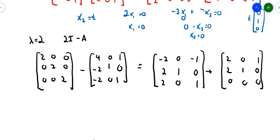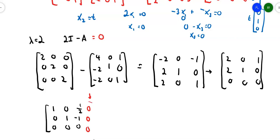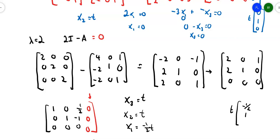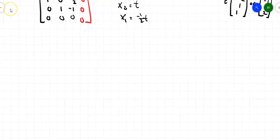After finishing the row reduction, I end up with the matrix: 1, 0, 1/2, then 0, 1, negative 1, then 0, 0, 0. Now drop in the column of zeros. We see x sub 3 is T, x sub 2 minus x sub 3 equals 0 so x sub 2 is T, and x sub 1 is negative 1/2 T. So our second eigenvector is T times [negative 1/2, 1, 1]. If you don't like fractions, write it as [negative 1, 2, 2], because scalar multiples of an eigenvector also work.